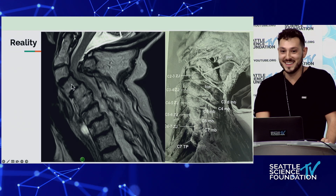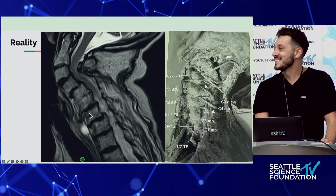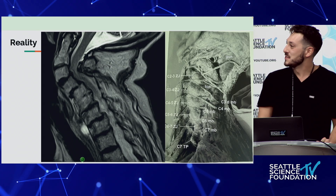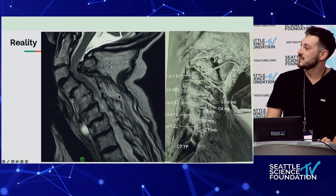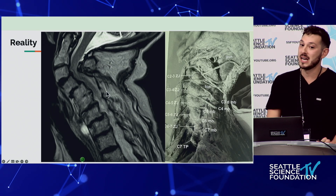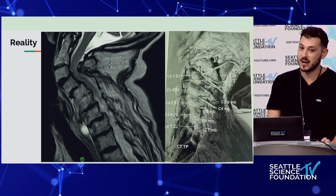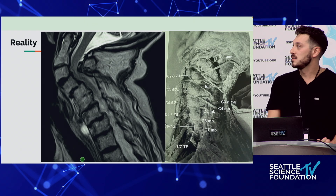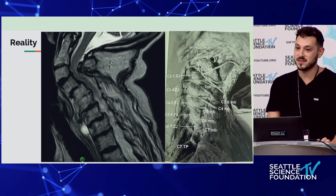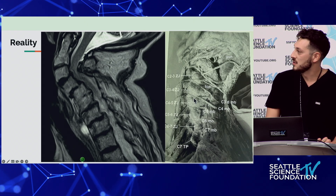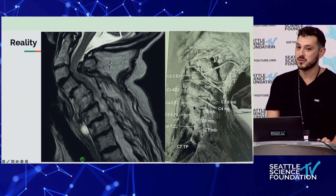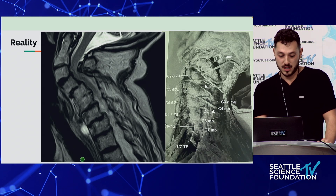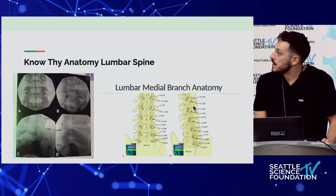I wanted to include this - it was the first spine RFA I did out of fellowship. I saw this and thought, you've got to be kidding me. You're not always going to have clean anatomy - you're also going to have anatomy that's extremely difficult to navigate. The only way you'll be able to get through that is when you have a protocol and can trust where you are in the anatomy. Understand that you're dealing with three-dimensional structures, and really understand your anatomy - it'll make your job much easier.